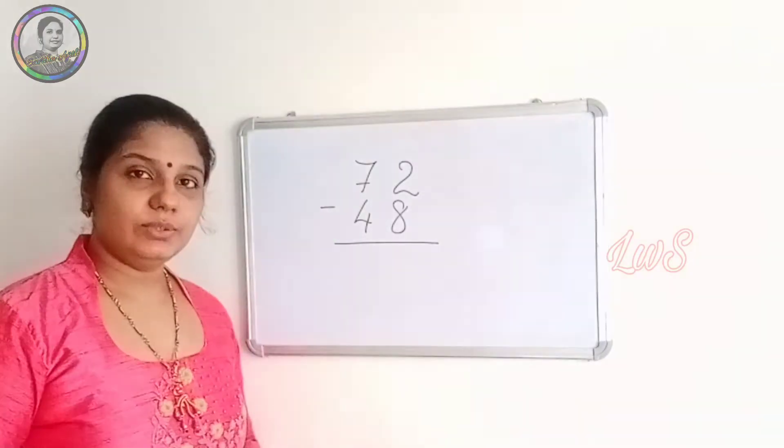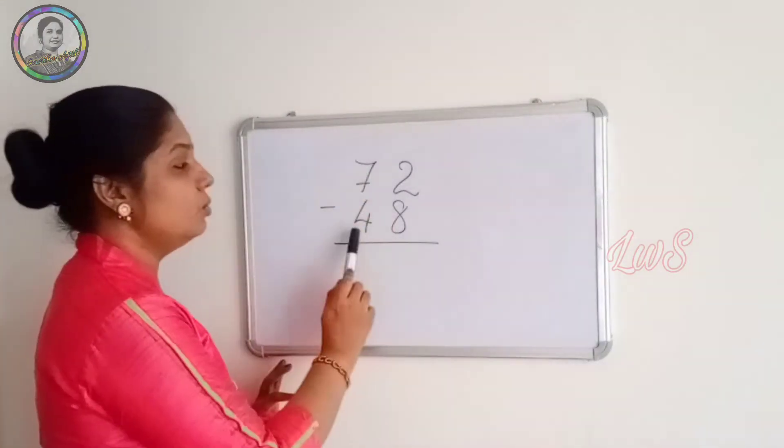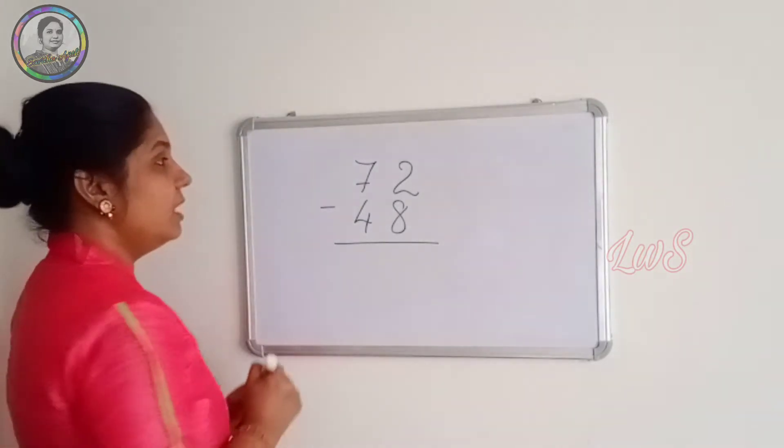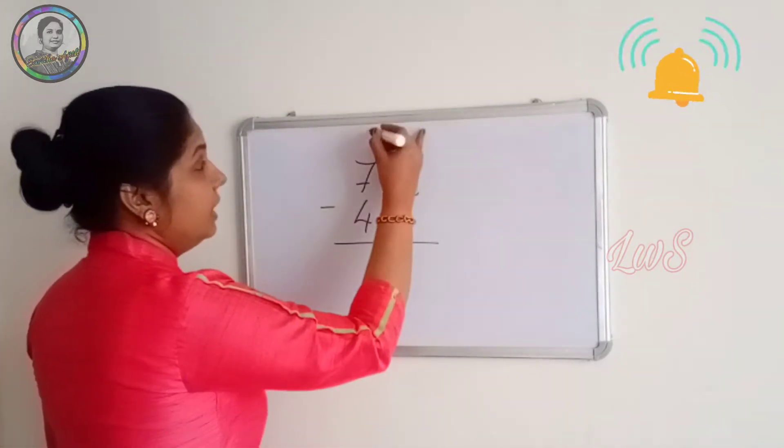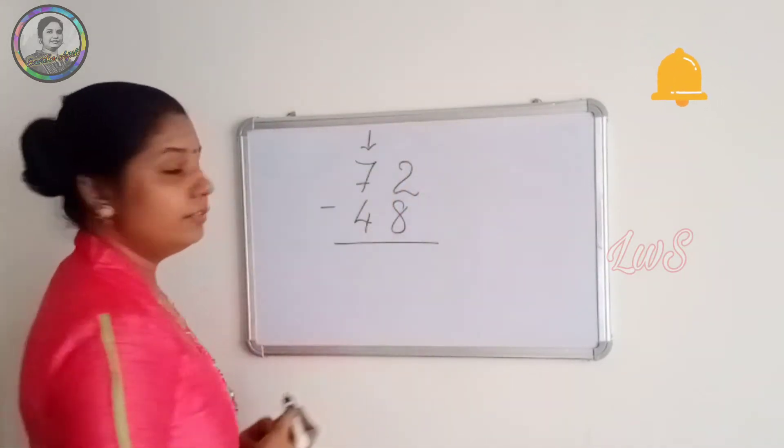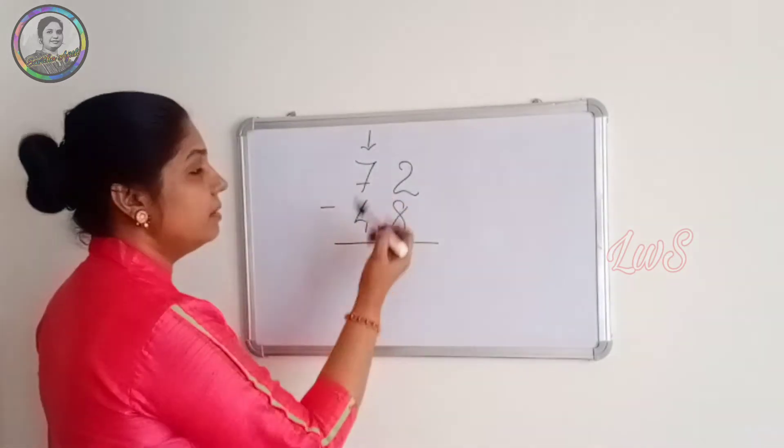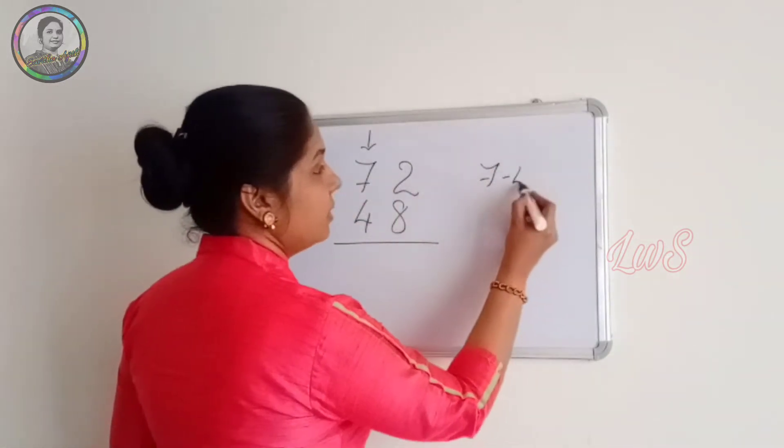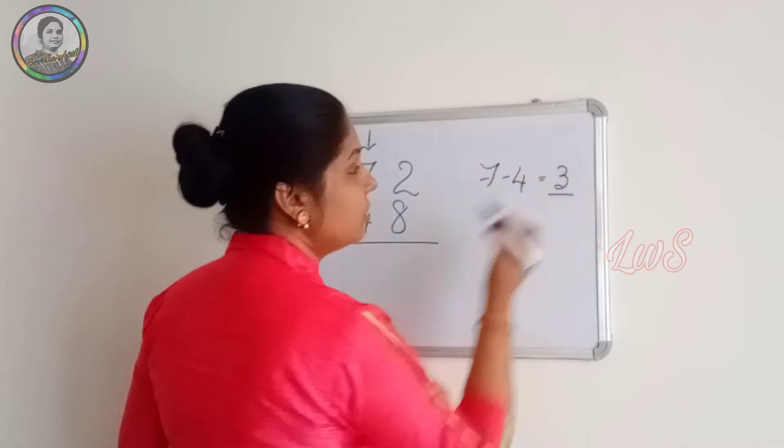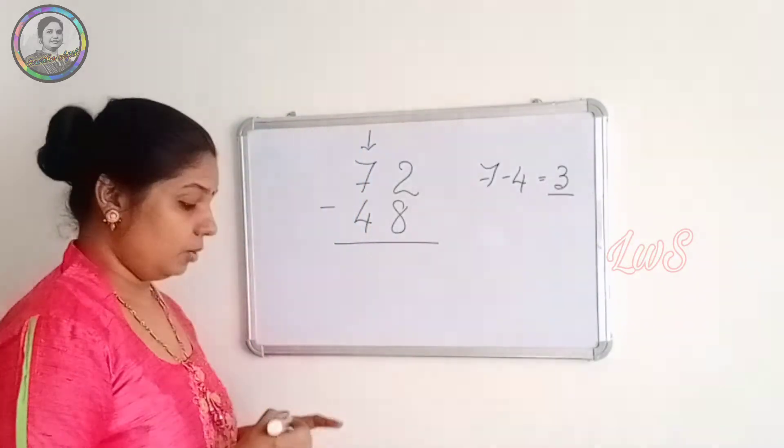We can start by doing this problem: 72 minus 48. As I said, we are starting from the left hand side. That is 7 minus 4. We know that 7 minus 4 is equal to 3.